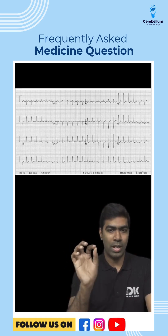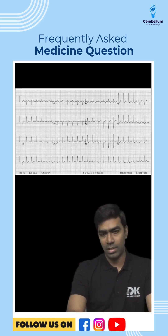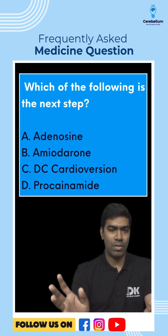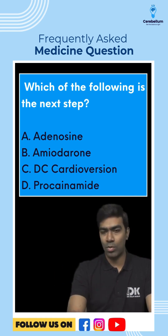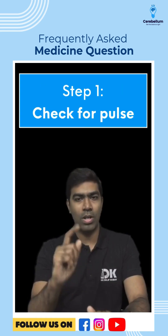What is the ECG showing? It's showing a regular narrow complex tachycardia. So what is going to be the next step? In exams, most of the time they're going to ask the therapy rather than the diagnosis itself. So let us follow a stepwise protocol.